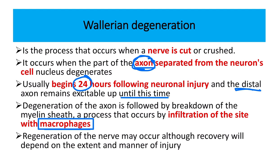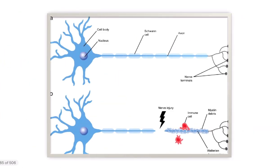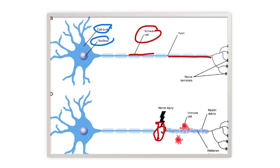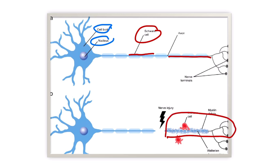Regeneration of the nerve may occur, although recovery depends on the extent and manner of the injury. Here we can see a normal neuron with the cell body and nucleus, the Schwann cell sheath, and the axon as the central part. From the injury site, the nerve is cut or crushed, and the distal part is destroyed — engulfed by immune cells, mainly macrophages.